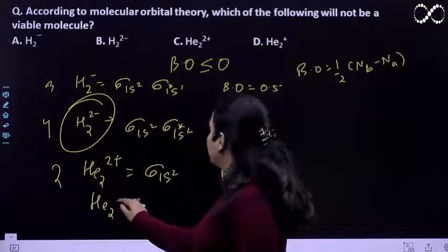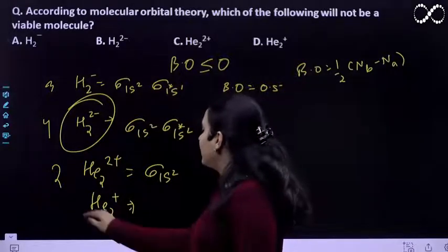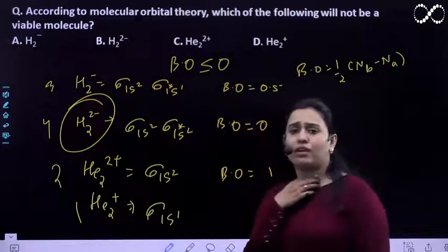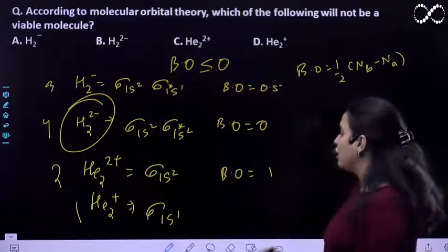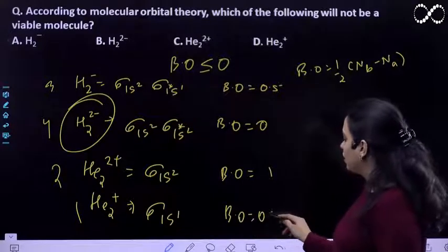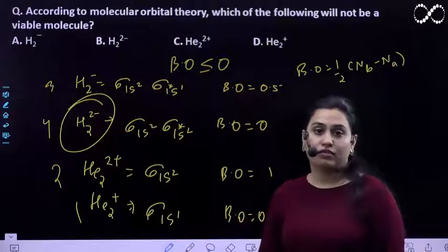If we talk about H2 positive, number of electrons is 1, sigma 1s is 1. Toh jo ek electron rahega, wooh bhi humara bonding molecular orbital mein jayega. So again the bond order will be 0.5.